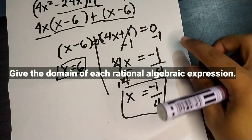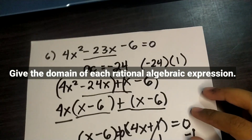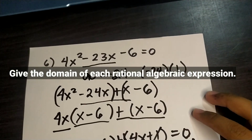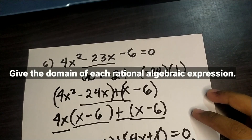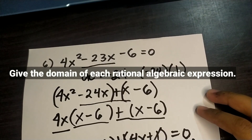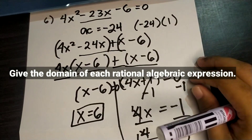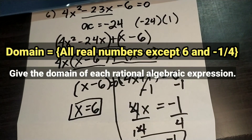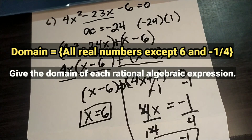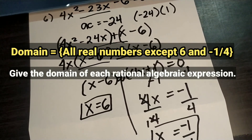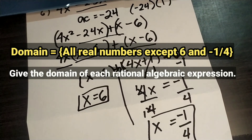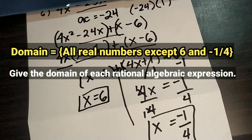If the given rational algebraic expression has a denominator of 4x squared minus 23x minus 6, to find the domain: the domain is equal to all real numbers except 6 and negative one-fourth.